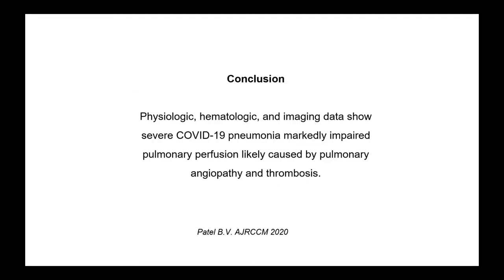In summary, given by Patel and co-workers, physiological, hematological, and imaging data show that severe COVID-19 pneumonia markedly impairs pulmonary perfusion, likely caused by pulmonary angiopathy and thrombosis.